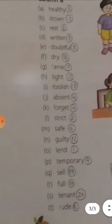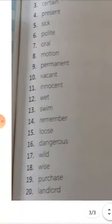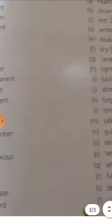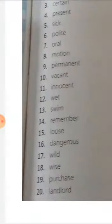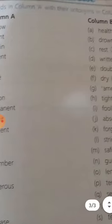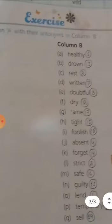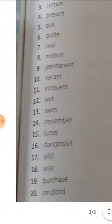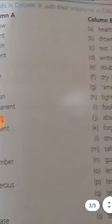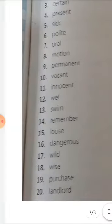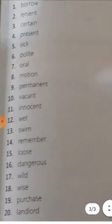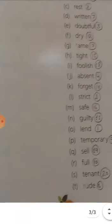Seventeenth, wild - what was it? Tame. Eighteenth, wise - what was it? Foolish. Nineteenth, purchase - what was it? Sell. Twentieth, landlord - what was it? Tenant.